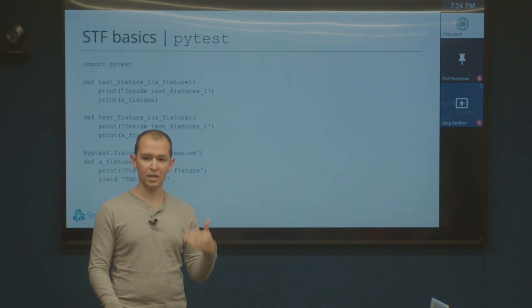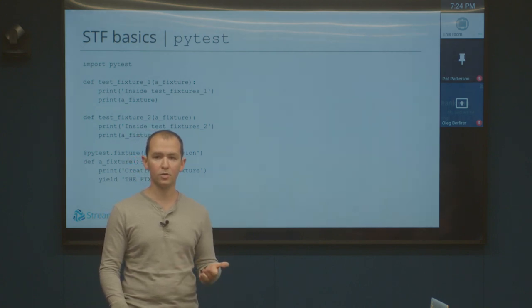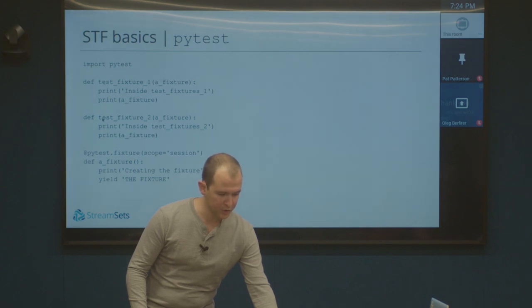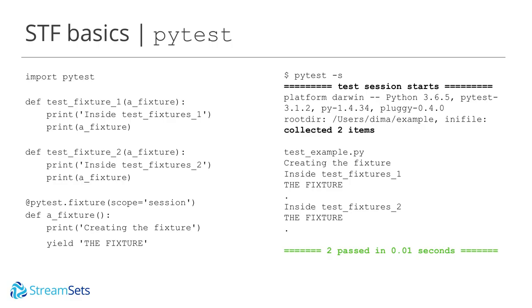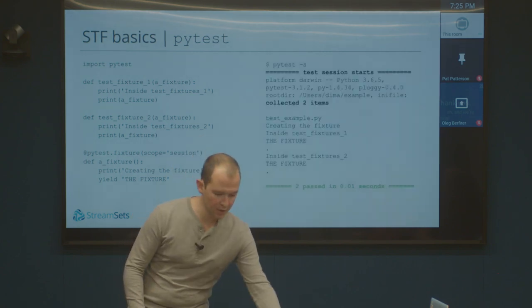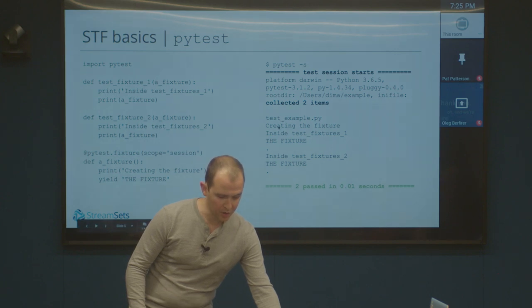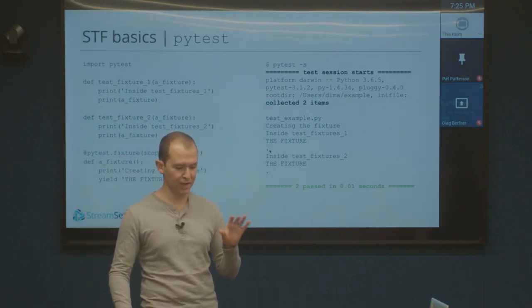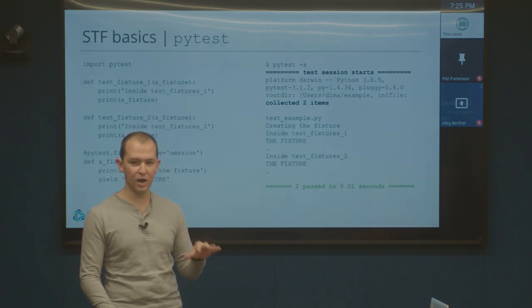We actually do that for something like StreamSets Data Collector, because we want to be able to say: start up a data collector of a particular version with the stage libraries I need. But once I start it, I don't need every single test to get a clean one of those, because that takes 10 seconds to start up in Docker — so just reuse them. This code here shows an example. I have two tests — test fixture one and test fixture two — and they both have this argument called a fixture, which is defined below. As soon as PyTest is run against this file, it's going to run all things that start with 'test'. When it sees that it needs a fixture, it'll go look for it, instantiate it, and from then on it's not going to need to again. So it creates the fixture for the first test, but then just reuses it later on.